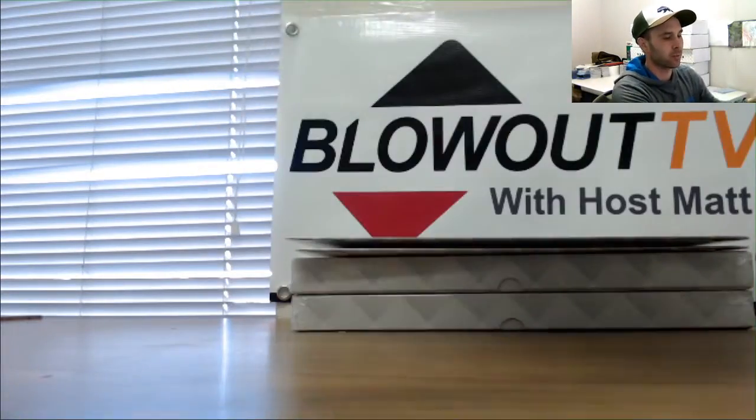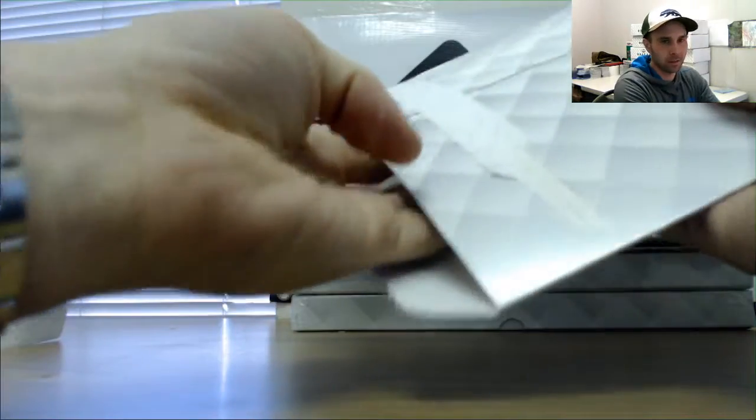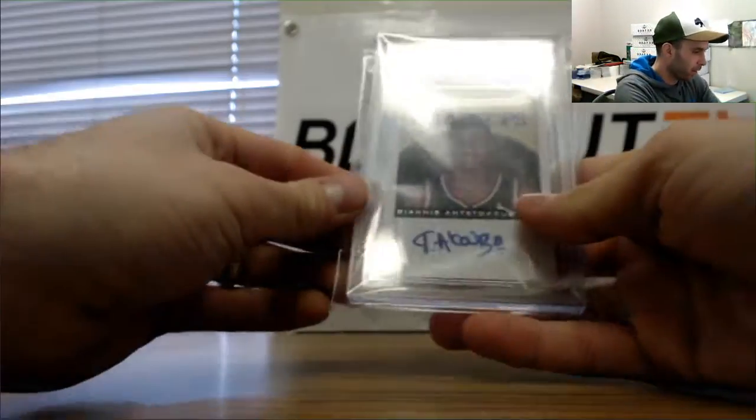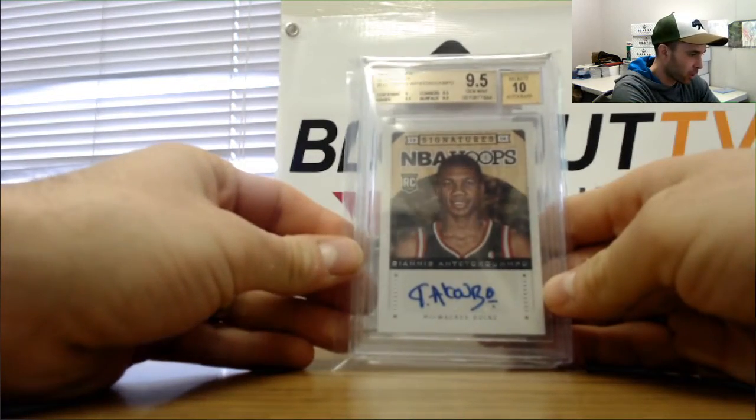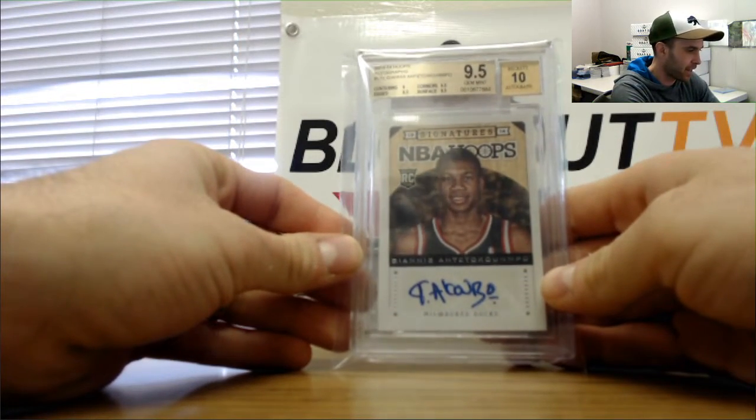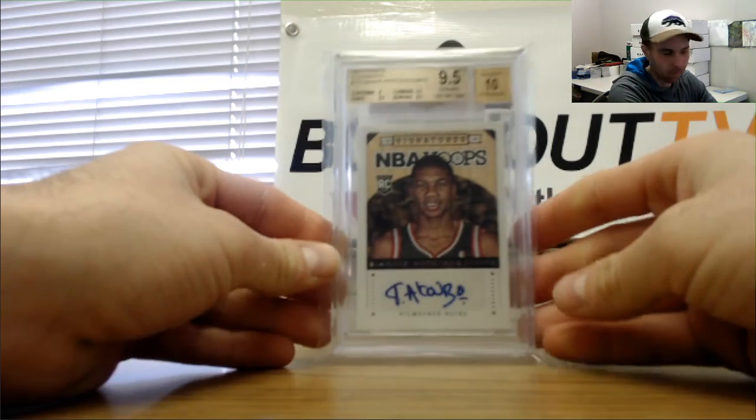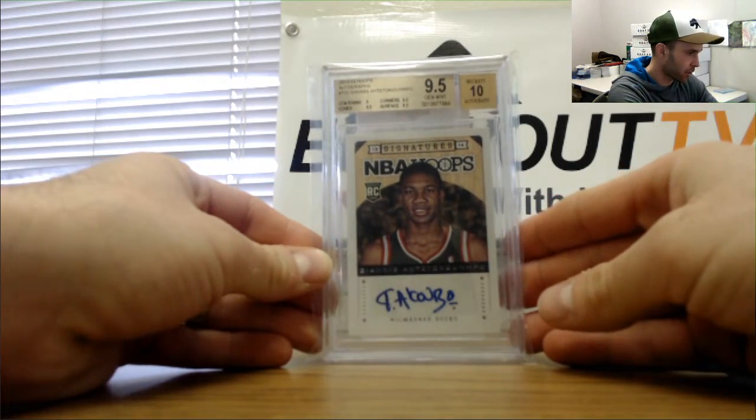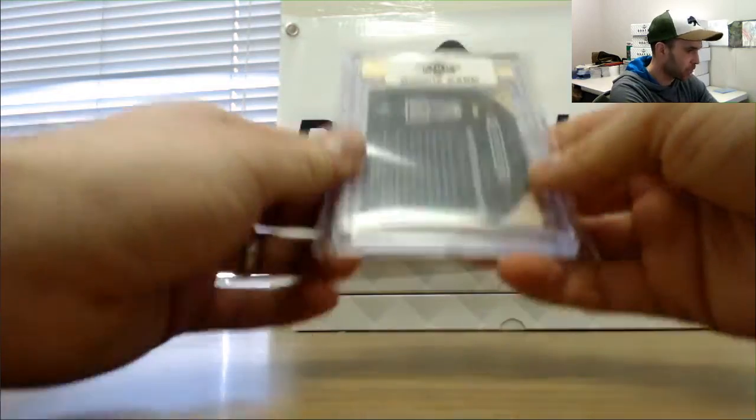Alright, first item. Start off, we got, alright, that's not bad. 13-14 Hoops rookie autograph 9.5/10 Giannis. Good start. Sub-grades all 9.5, centering 9 on the Greek Freak.